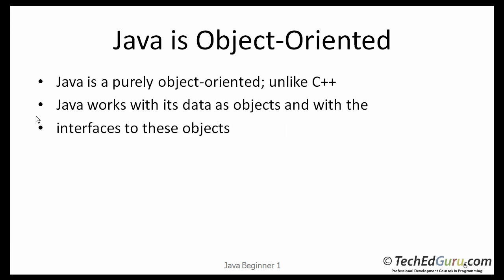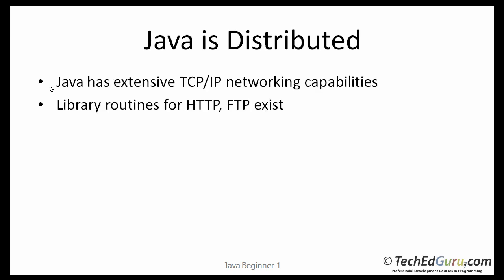Java is object-oriented — it is a purely object-oriented programming language, unlike C++, which only supports object-orientation. Java is also considered a distributed programming language. It has extensive support for TCP/IP and networking capabilities, and it also contains library routines for HTTP and FTP protocols.